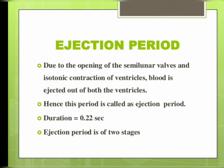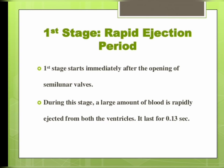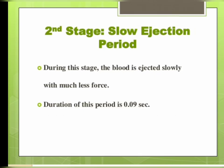The next is the ejection period. Due to the opening of semilunar valves and isotonic contraction of the ventricles, blood is ejected out of both ventricles, hence this period is called the ejection period. Its duration is 0.22 second and it has two stages: the first is the rapid ejection period lasting 0.13 second, during which a large amount of blood is rapidly ejected. The second is the slow ejection period lasting 0.09 second, during which blood is ejected slowly with much less force.